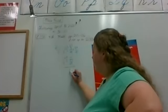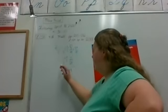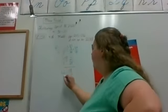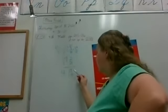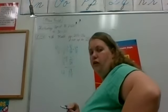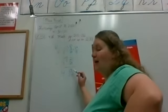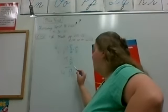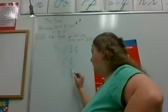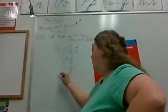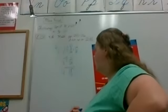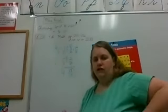24 is going to be on the bottom because we keep the same denominator. 27 minus 8 is 19. 6 minus 2 is 4. Can we reduce 19 over 24? We can leave it because 19 is prime. So 4 and 19 over 24 is our answer.